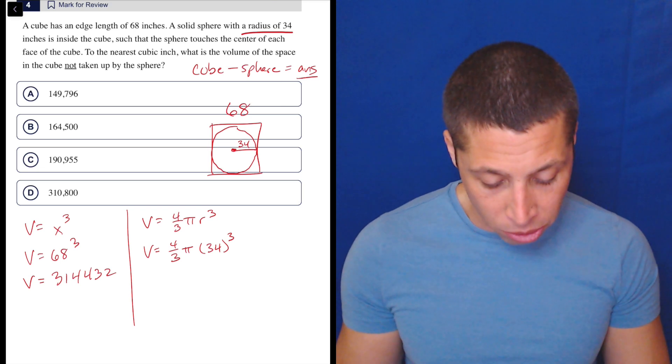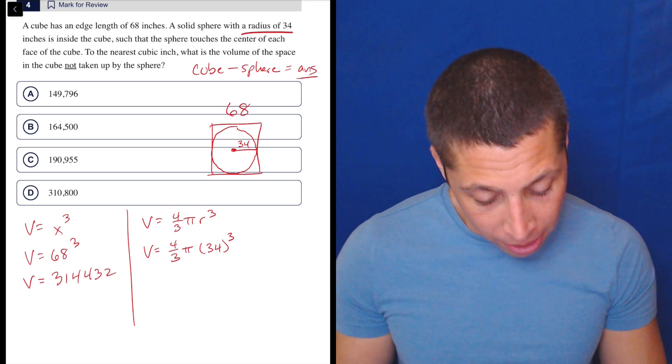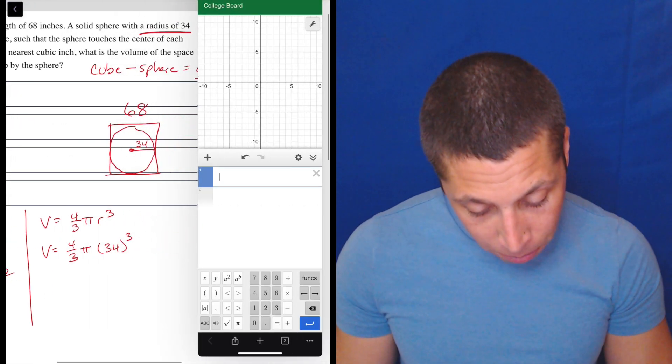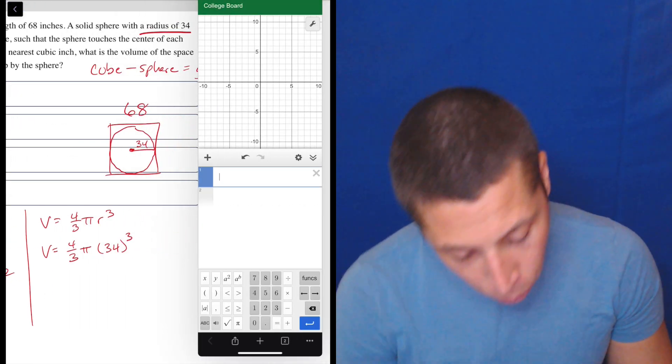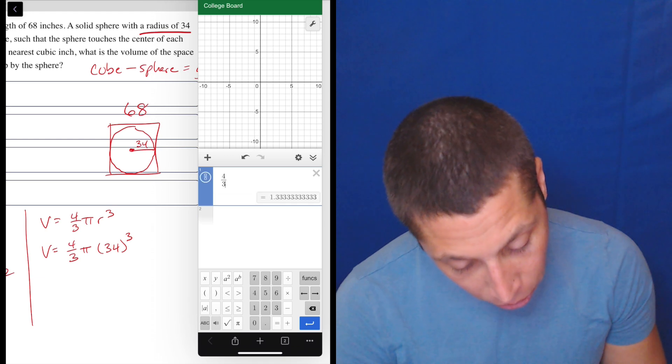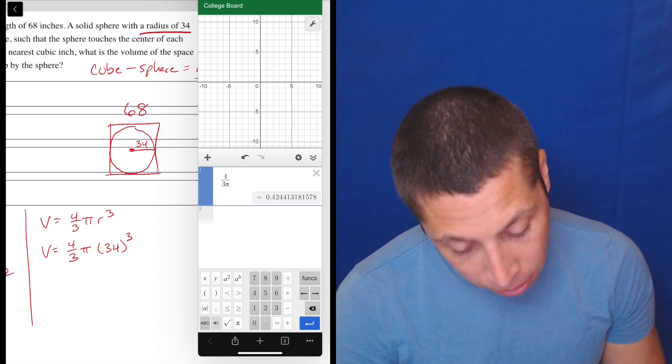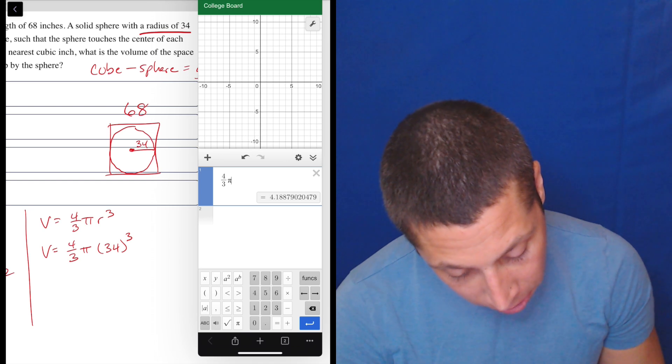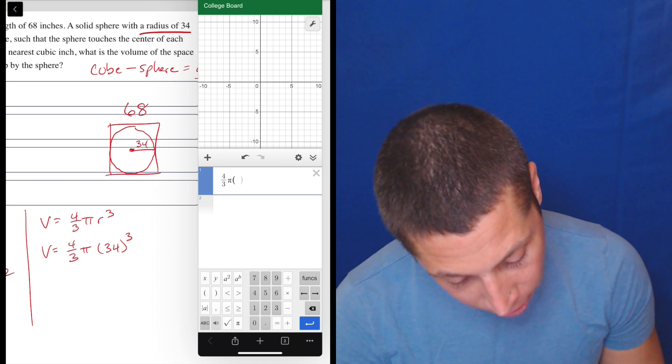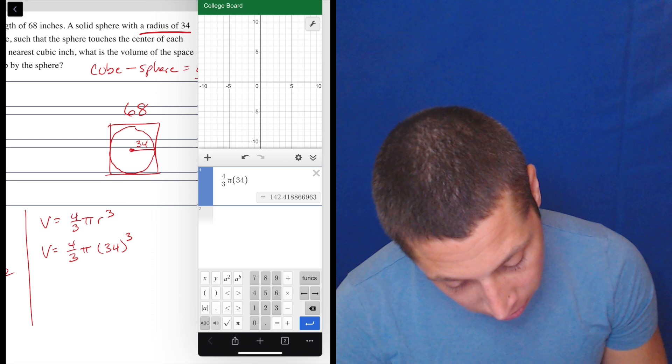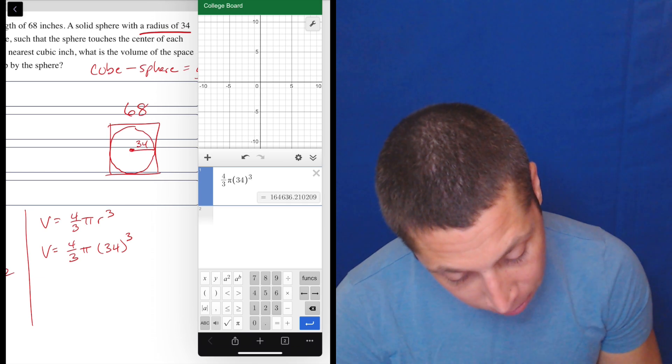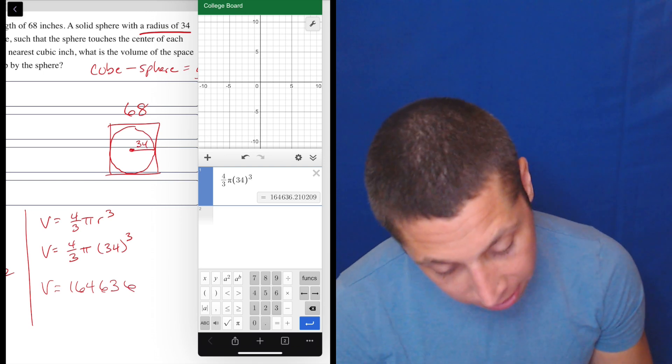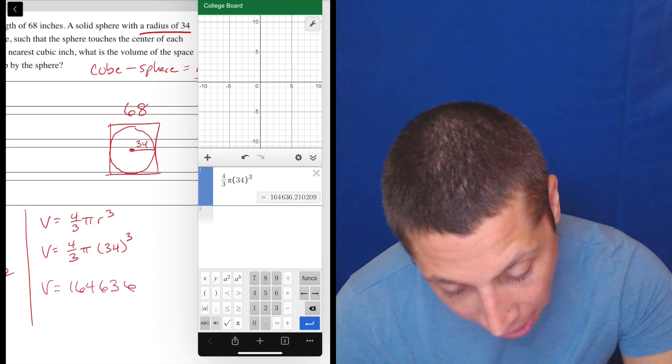Regardless, now we can just do some math here. So four-thirds pi r cubed. This one, you can do it in your regular calculator. Just to show you, be careful how you do everything in Desmos or how you do anything in the calculator. So four-thirds, if you type that pi right now, it's going to put it in the wrong spot. So you got to make sure you're out of there. Four-thirds pi and then 34 to the third gives me a volume of 164,636. I'll leave off the decimals because it's not going to matter.